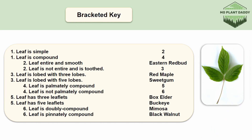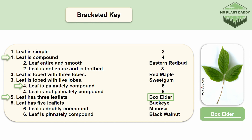Let's do another example starting out at couplet 1. Is our leaf simple or compound? It's compound, therefore we will go to couplet number 4, which asks if our leaf is palmately compound or not, which it is. So now we will go to couplet 5, which asks if our leaf has 3 or 5 leaflets. Our leaf has 3 leaflets, so our leaf is boxelder, otherwise known as Acer negundo.